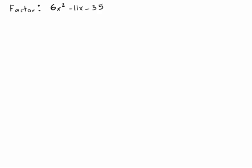And in particular, we're going to take a look at this problem: factoring the trinomial 6x squared minus 11x minus 35 using AC method.